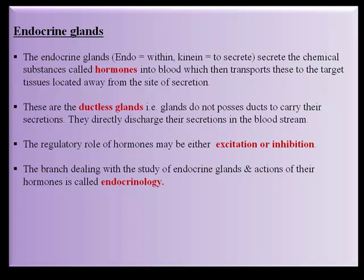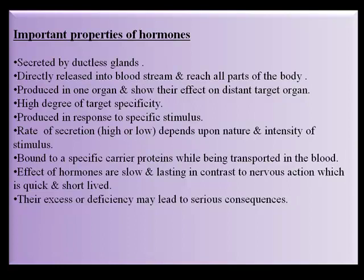The branch dealing with the study of endocrine glands and their hormones is called endocrinology. Important properties of hormones: they are secreted by ductless glands and directly released into the bloodstream, reaching all parts of the body. They are produced in one organ and show their effect on a distant target organ, with a high degree of target specificity. They are bound to specific carrier proteins while being transported in the blood.